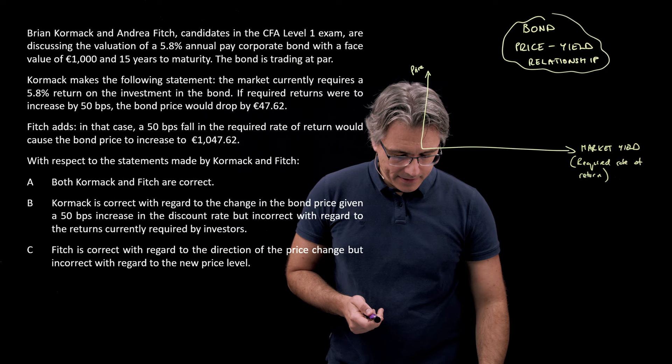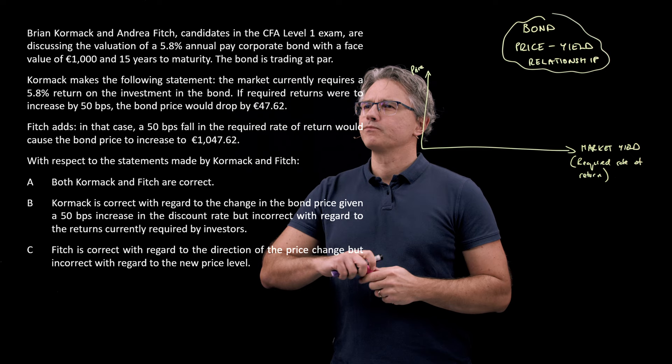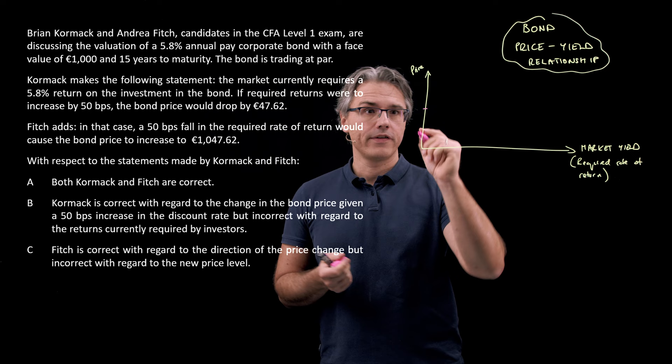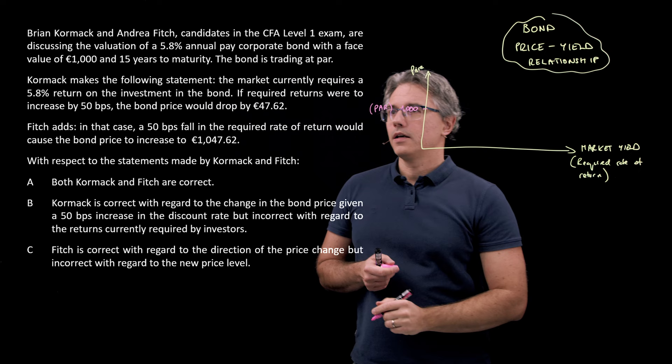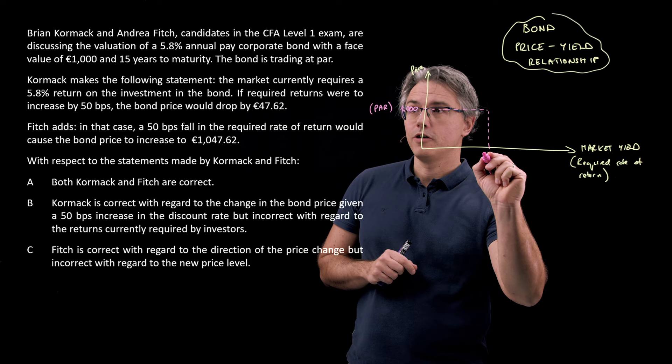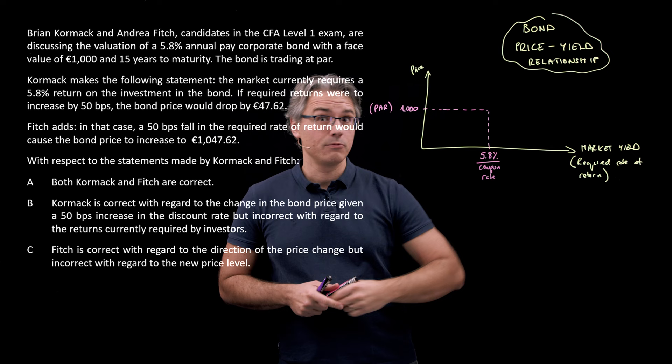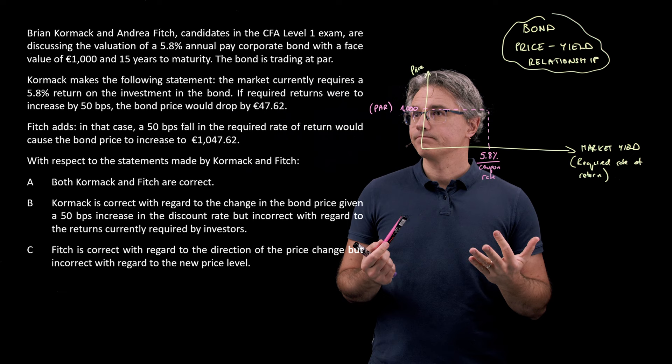And the first thing to understand is that if our bond is trading at par, it means that the current price for the bond is equal to par value 1,000 euros. So, par value. And that's because the level of return required by market participants is in line with whatever the coupon rate is on the bond. So 5.8%. It seems that this coupon on the bond, the coupon rate, is perfectly in line with what investors would expect on a bond with this level of risk.